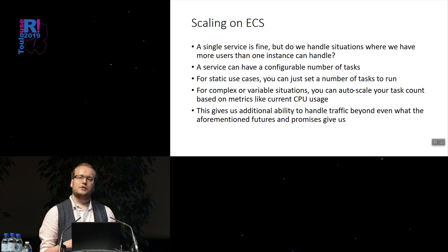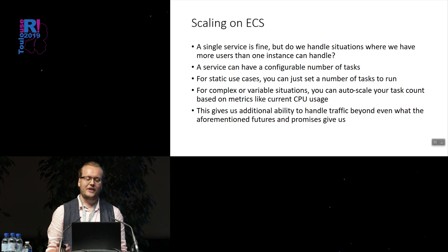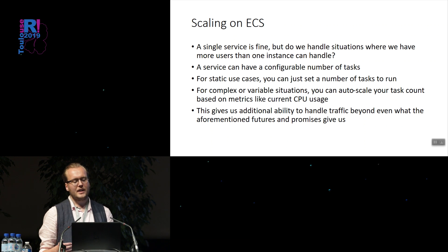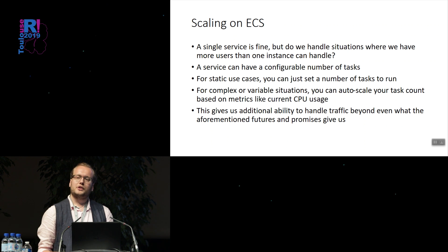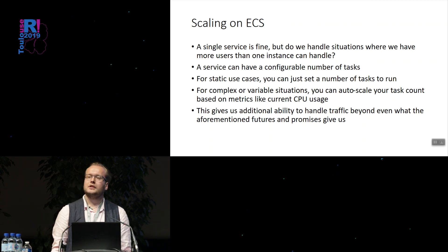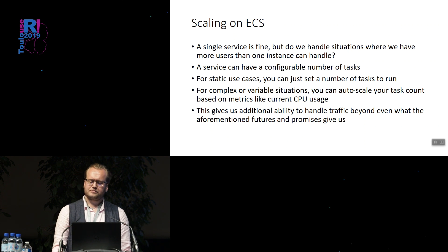In terms of scaling, we've done a lot of vertical scaling within the process with futures and promises. But if we're starting to exceed the load that a single machine can handle, how do we scale out past that? A service in ECS can have a configurable number of tasks. If you have a static use case, you can just set a particular number of tasks to run. But if you have traffic spikes at certain hours of the day, you can set your service to auto-scale — using a CPU usage threshold to scale up and down as necessary — which really allows us to go wide with the number of instances.